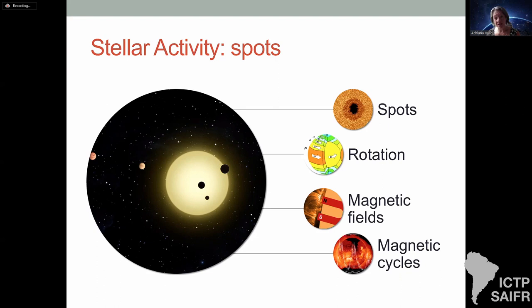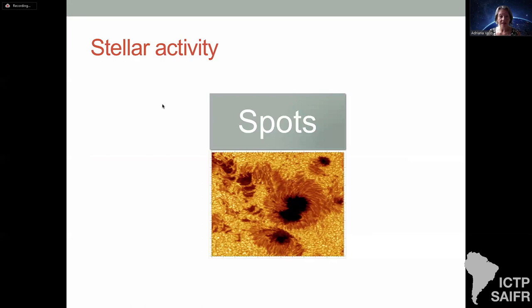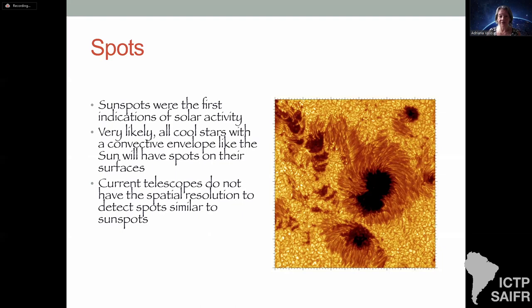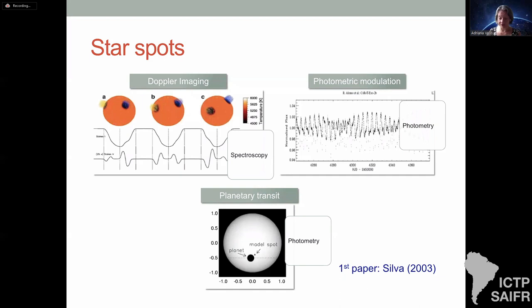Activity characterization: we can assess stellar activity from spots on the surface, stellar rotation, magnetic field measurements, and if we're lucky, magnetic cycles. Spots were the first indicators of solar magnetic activity since Galileo pointed his first telescope at the Sun in 1610 and observed what he called maculae. Just by counting spots the 11-year cycle was discovered in the mid-19th century.